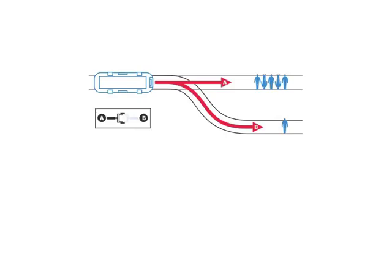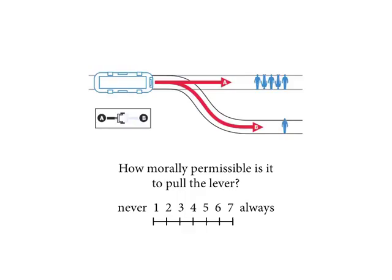In the usual presentation the subject reads a narrative or sees a picture, then they're asked how morally permissible it is to pull the lever. You're given a scale one to seven, ranging from it's never morally permissible to you should always do it. People vary a lot in what they select here. I'm going to give two more scenarios - think about what you would do.